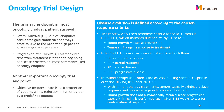Setting up the design for the oncology clinical trial is critical. The primary endpoint in most oncology trials is patient survival. Overall survival, or OS, is a clinical endpoint and considered gold standard. However, it is not always practical due to the need for high patient numbers and long required time. Progression-free survival, or PFS, measures time from treatment initiation to beginning of disease progression. It is the most commonly used oncology endpoint. Another important endpoint is objective response rate, or ORR.